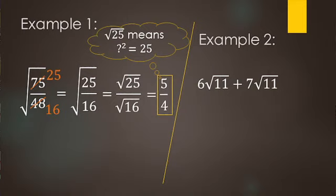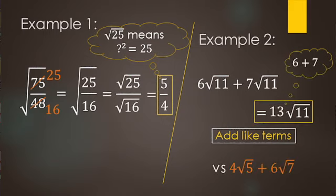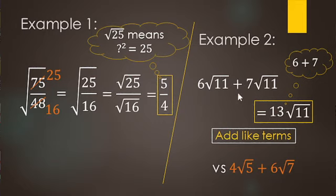Here we have six root 11 plus seven root 11 — that's an add like-terms type question. Six square roots of 11 plus seven square roots of 11 makes 13 square roots of 11. Compare that to four root 5 plus six root 7 — those radicands are different, so you cannot add like terms. You can only add them if the radicands are the same. Note this is addition; if it were multiplication, you'd multiply the coefficients and the radicands separately.